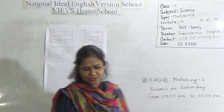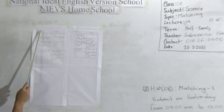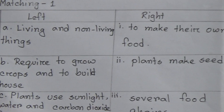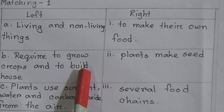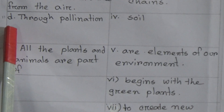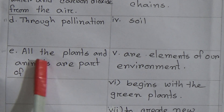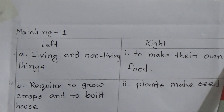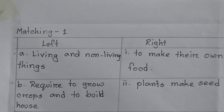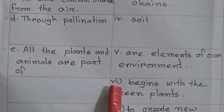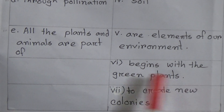Let's start from today's topic. The first matching belongs to Chapter One. On the left side there is: A) living and non-living things, B) required to grow crops and to build houses, C) plants use sunlight, water and carbon dioxide from the air, D) through pollination, E) all the plants and animals are part of. On the right side: 1) to make their own food, 2) plants make seed, 3) several food chains, 4) soil, 5) are elements of our environment, 6) begins with the green plants, 7) to create new colonies.